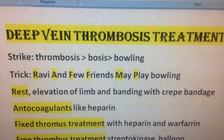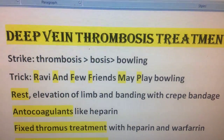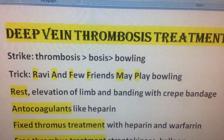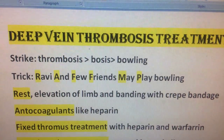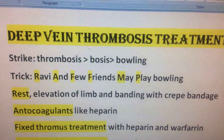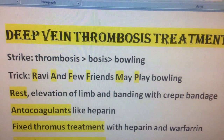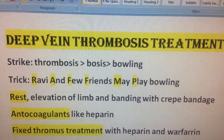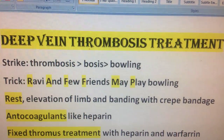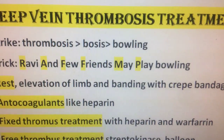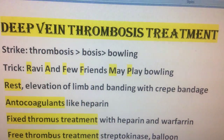Deep vein thrombosis treatment — the striking word is 'balling,' which we get from thrombosis. The mnemonic is: Ravi and few friends may play balling — representing Rest, Elevation of limb, and Banding with cap bandage.